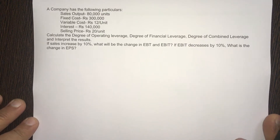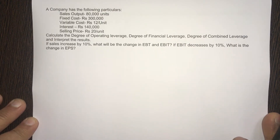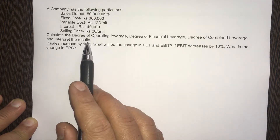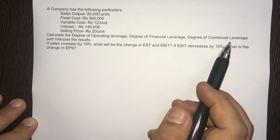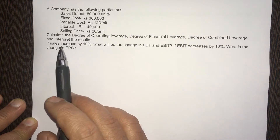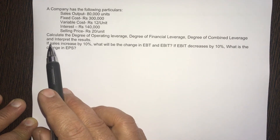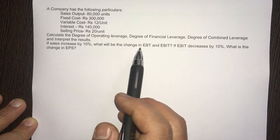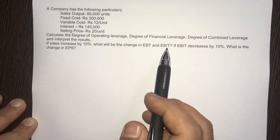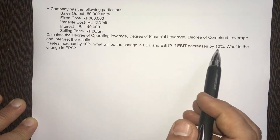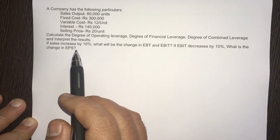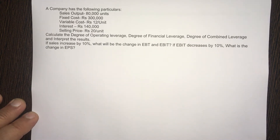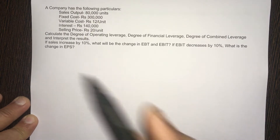Welcome back. Let's look at another leverage problem where we have to find out the DOL, DFL, DCL and interpret the results. Plus we have another part in this problem: if sales increase by 10%, what will be the change in EBT and EBIT? If EBIT decreases by 10%, what is the change in EPS? Very similar to the previous leverage problem.